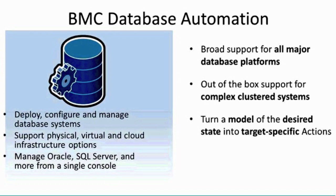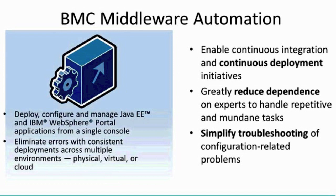You could think of it as a DBA in a box — you just turn it on and it goes. Our last solution is middleware automation, deploying and managing Java EE applications. This is an application layer that sits on top of whatever server you just deployed. Going back to the Taxware use case where they had servers up to a certain spec — now the middleware automation piece allows you to lay that application down very quickly and succinctly so that it's ready to go too.